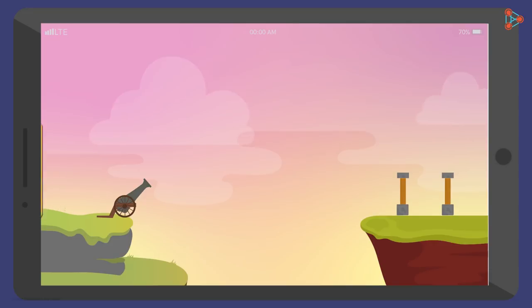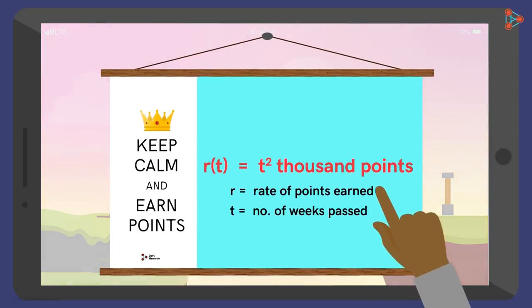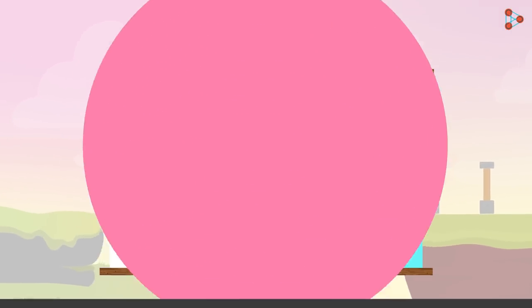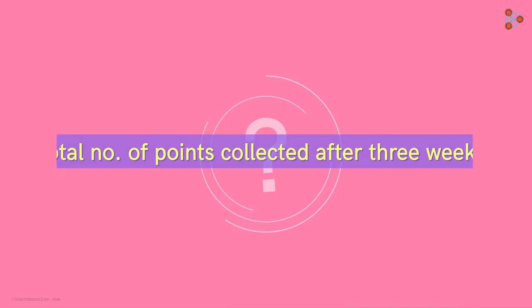Luckily the game has a feature that shows the rate at which you are earning the points. It shows that after t weeks, your rate is t squared 1000 points per week. So assuming that you keep earning points at this rate, how many points will you have after 3 weeks?